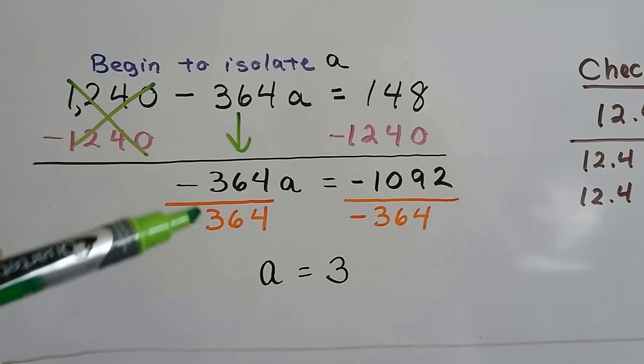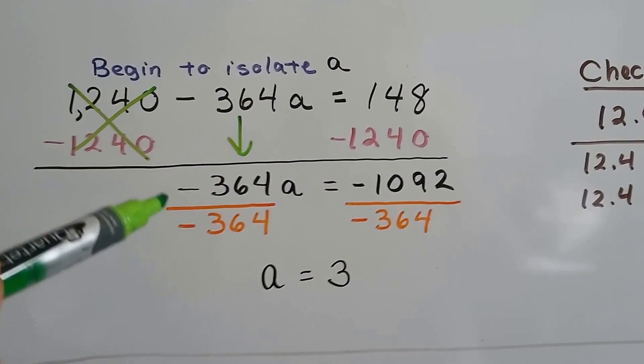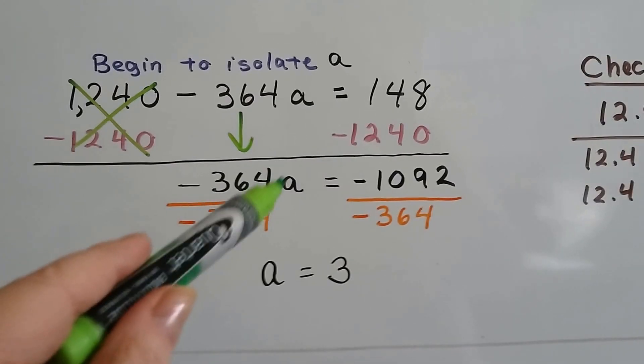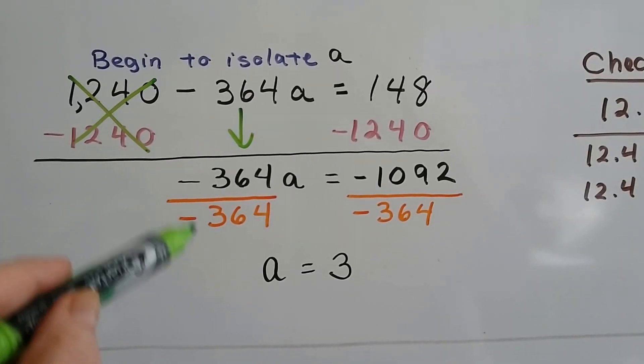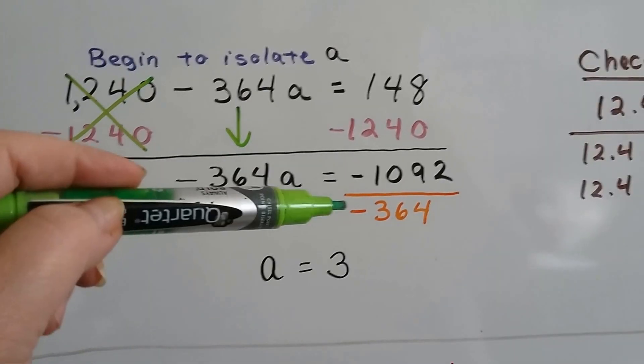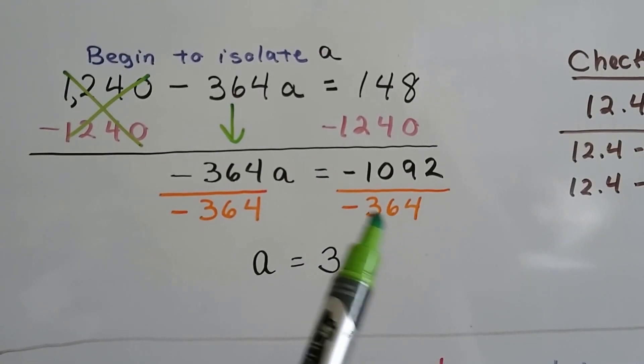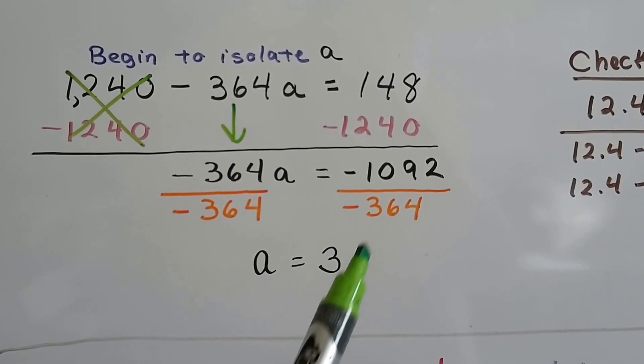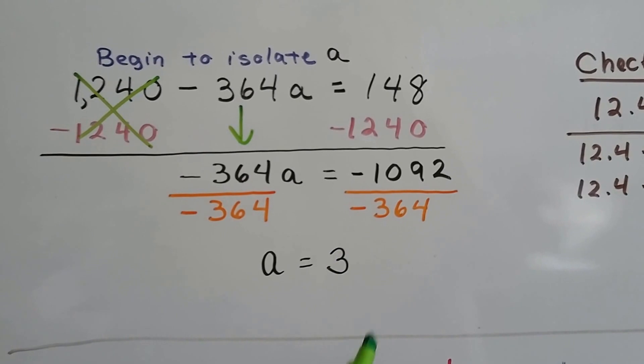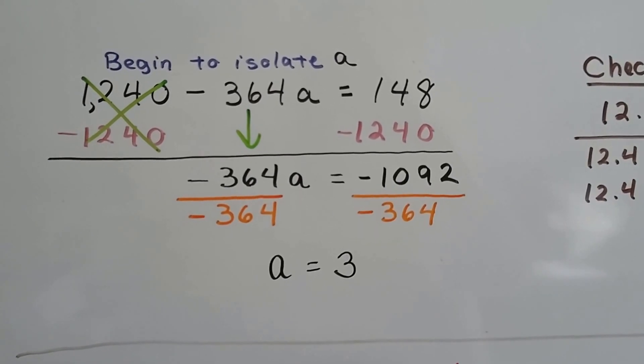We divide each side by this negative 364, so that makes a positive a, because negative and negative divided makes a positive. And this makes a positive 3, because negative 364 times 3 is negative 1092.